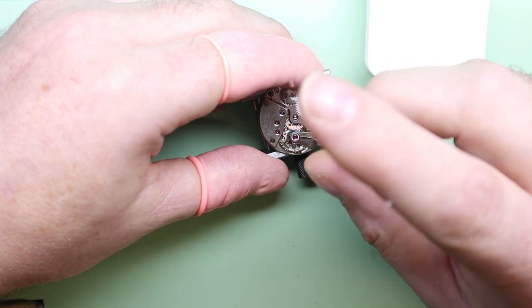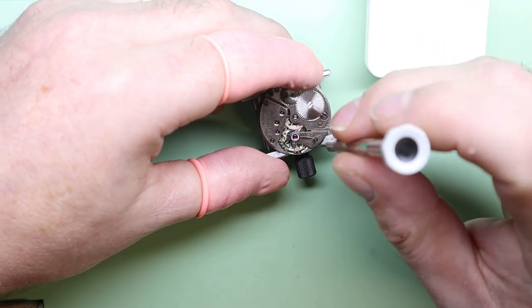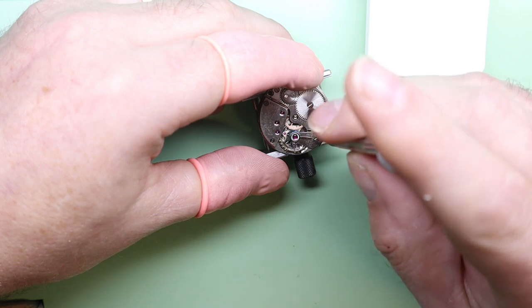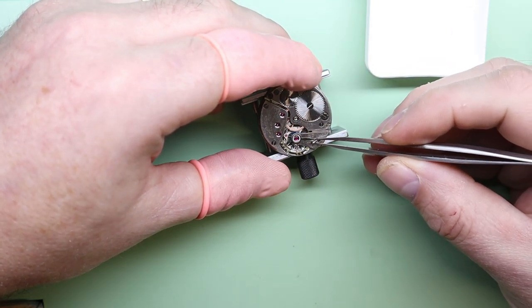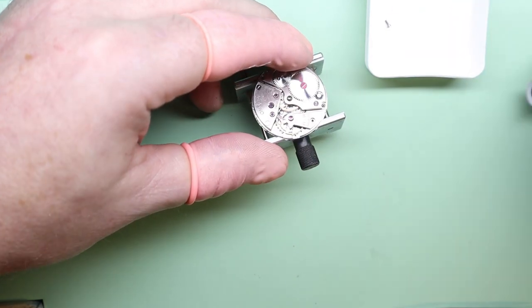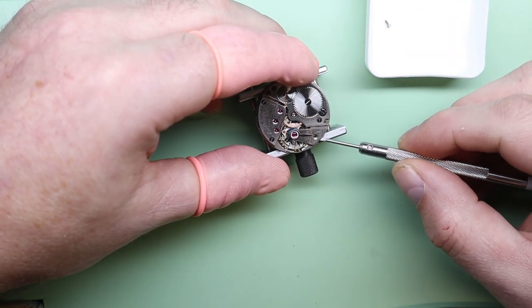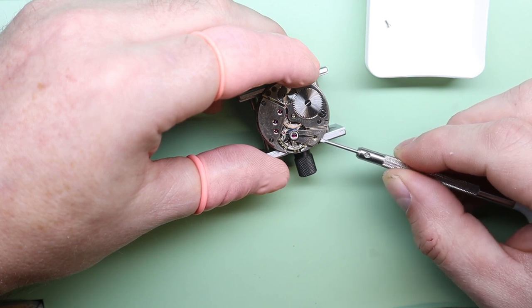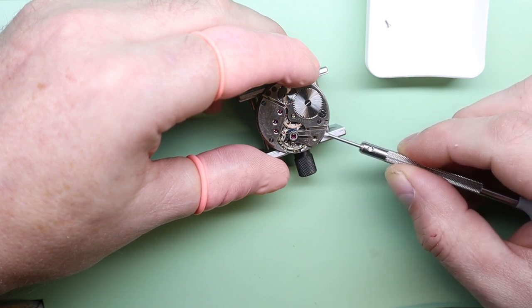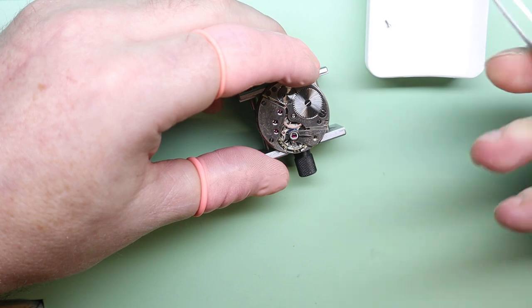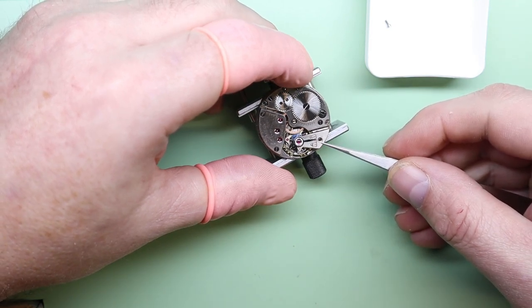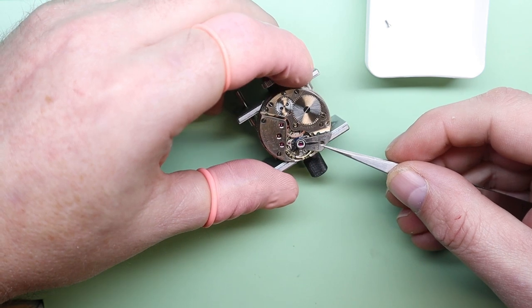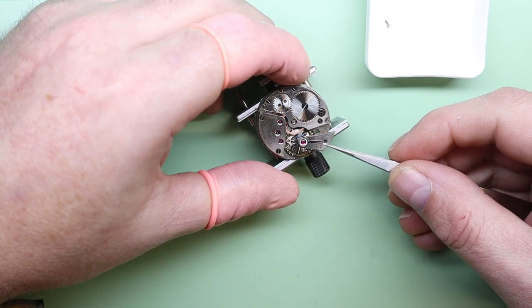It's worth mentioning here that whenever you're removing a balance from a watch, once you've managed to remove the screw and lift the cock off the main plate, always be careful and try and angle the balance out at a certain angle so that the hairspring comes out from underneath the center wheel. Sometimes you can catch the hairspring on the teeth of the center wheel and end up bending the hairspring. So always be very careful, especially with Breguet springs, not to catch it on that center wheel.